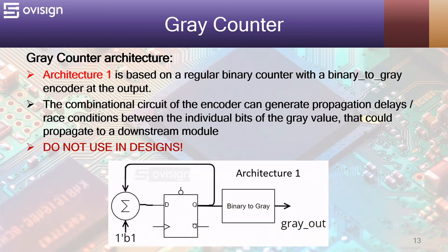Let's analyze now two gray counter architectures. Architecture 1 is based on a regular binary counter with a binary to gray encoder at the output. This is also called a false gray counter.